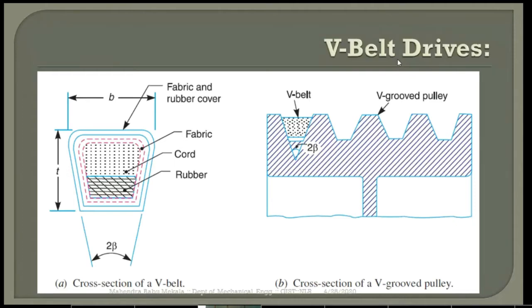Now, the next type of belt drive is the V-belt drive. The belt cross-section is a trapezoidal cross-section here. Earlier, in the case of flat belt drive, the cross-section is a rectangular cross-section. Now, the cross-section is a trapezoidal cross-section.